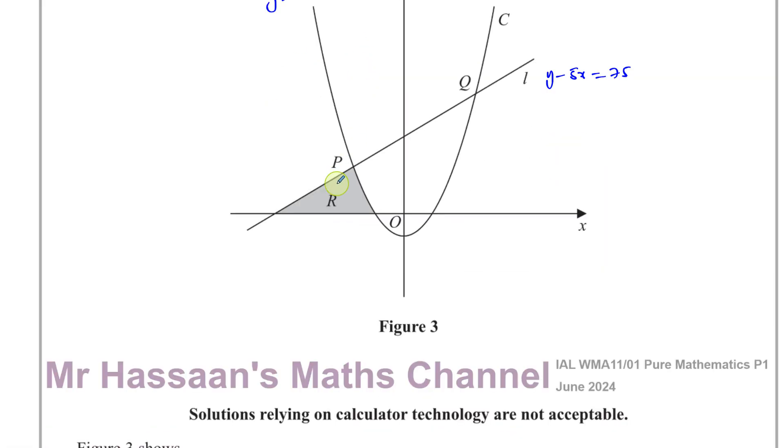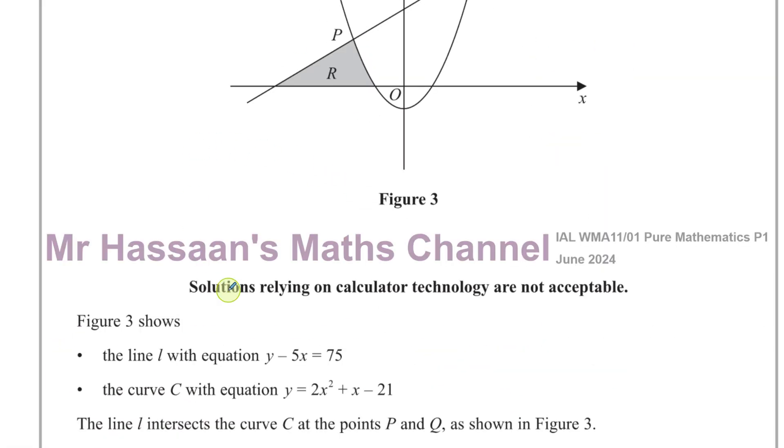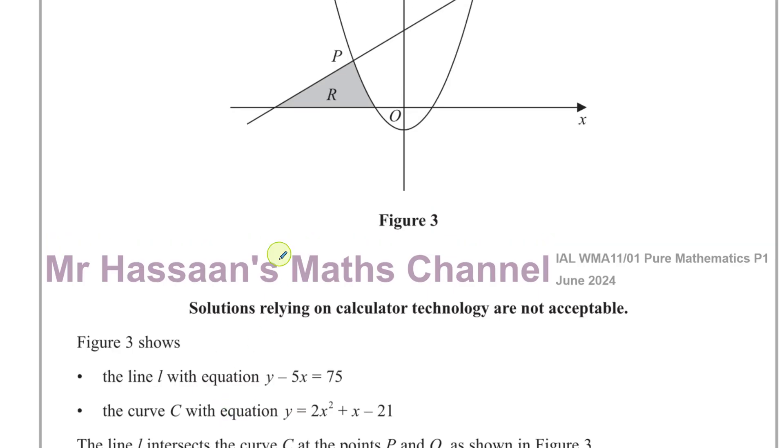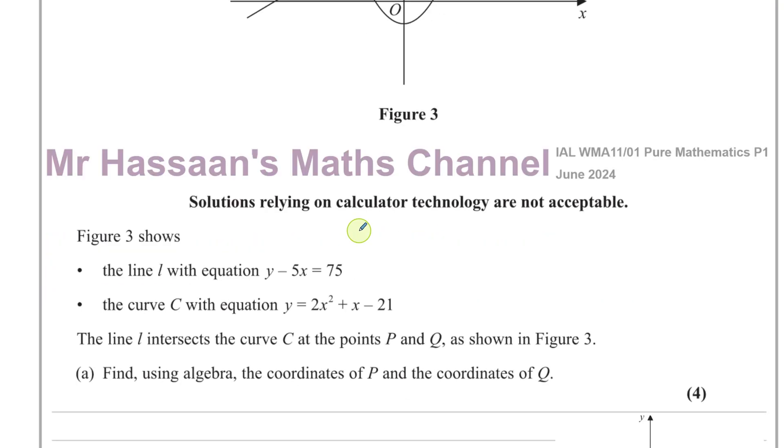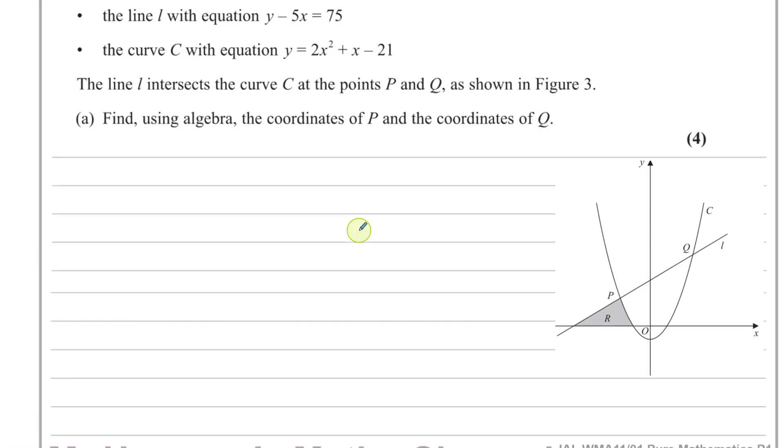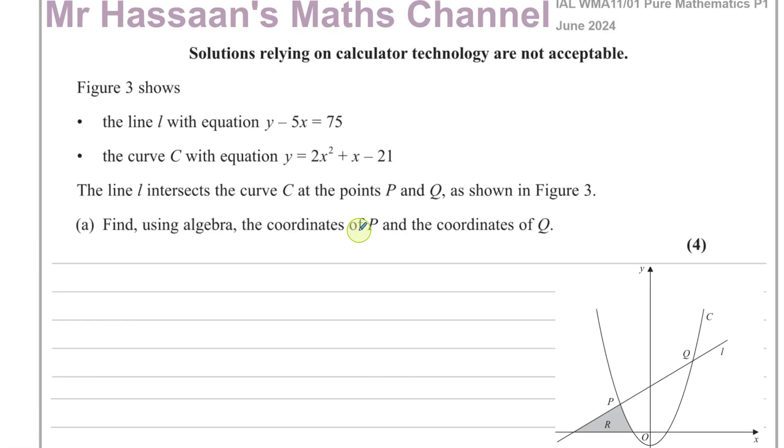What we're supposed to do here is we're told that the line L intersects the curve at two places, P and Q. So we have to use algebra to find the coordinates of P and Q. When we try to find where two functions intersect, we solve the equations simultaneously.